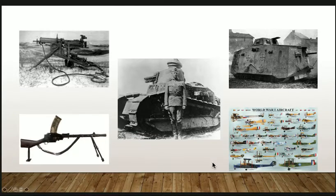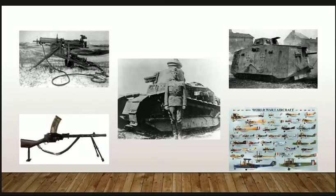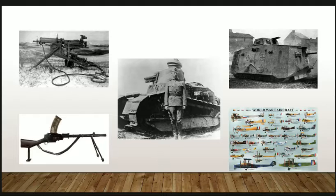Tanks ran on caterpillar treads and were built of steel — when you shot one, the bullets just bounced off. The British first used tanks in 1916 at the Battle of Somme where 1.2 million people died, but they didn't use them very effectively. By 1917 the British had learned how to drive large numbers of tanks through barbed wire fences, clearing a path for the infantry to follow and use them as cover — which is the appropriate use of tanks.